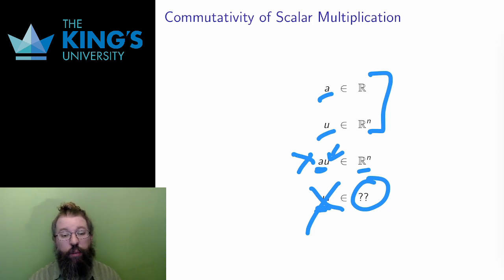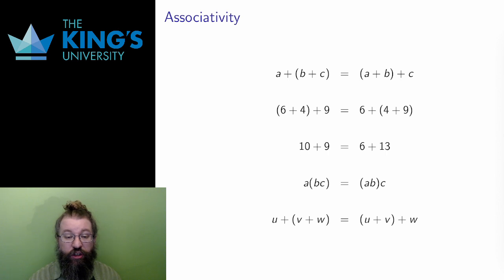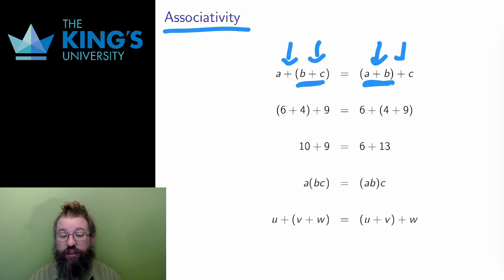Let me talk about some other operation properties. In addition to commutativity, normal addition and multiplication are associative. What does that mean? Associative means that if I have two instances of the same operation, then I can bracket them either way, doing the first operation first or the second operation first. By way of an example, here is the addition of three numbers. 6 plus 4 plus 9.